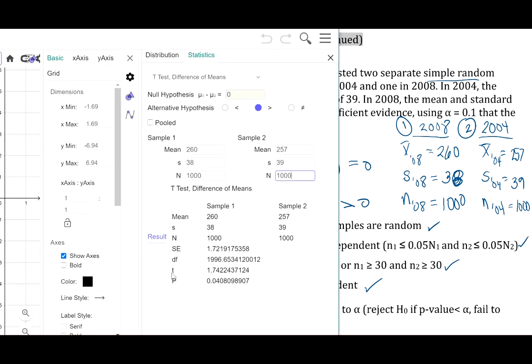Here's our results. We have a test statistic, a t-test statistic of 1.742, and we have a p-value of 0.0408.